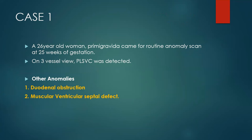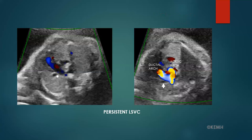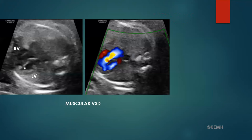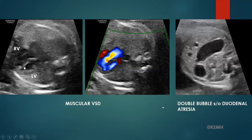Case 1 is a 26-year-old primigravida who came for an anomaly scan and PLSVC was detected. A muscular VSD and duodenal atresia were the additional anomalies. These are the images of PLSVC lateral to the ductal arch, the muscular VSD with flow from right ventricle to left ventricle, and the transverse section of the fetal abdomen showing a double bubble sign, suggestive of duodenal atresia.